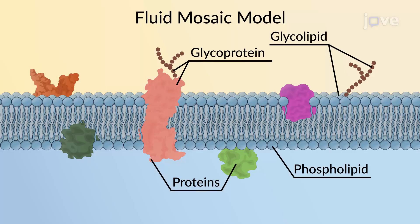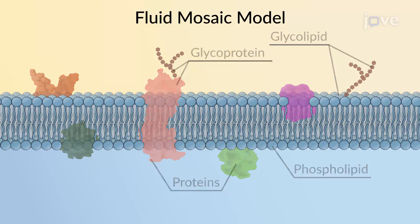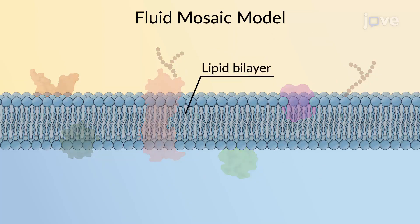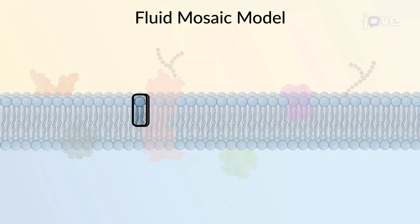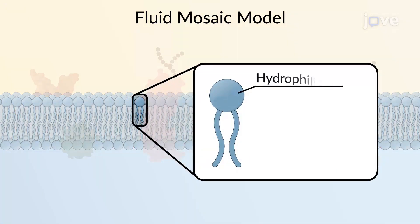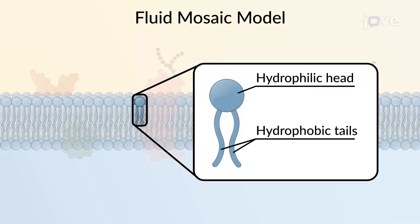Singer and Nicholson first proposed the fluid mosaic model in 1972 to describe the structure of the cell membrane. According to this model, the membrane is a fluid lipid bilayer composed of two layers of phospholipids. Phospholipids contain a hydrophilic head and two hydrophobic fatty acid tails.